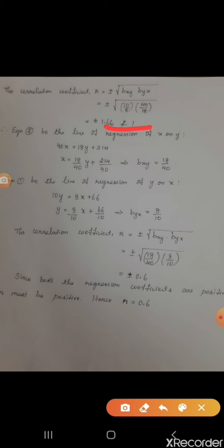We interchange: equation 2 is now taken as the line of regression of x on y. Keeping x on the LHS: x equal to (18/40)y plus 214/40. The coefficient of y, 18/40, is b_xy. Equation 1 is now the regression line of y on x; keeping y on the LHS: y equal to (8/10)x plus 66/10, so b_yx equal to 8/10. Multiplying b_xy and b_yx and taking the square root gives plus or minus 0.6, which strictly lies between minus 1 and plus 1 — so this value is correct.